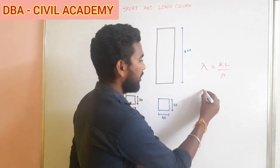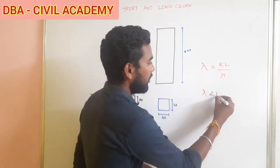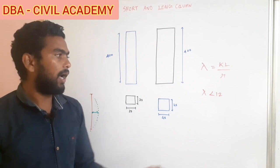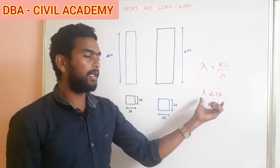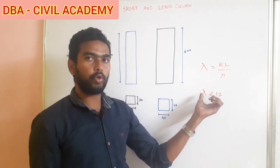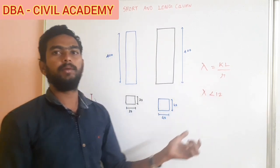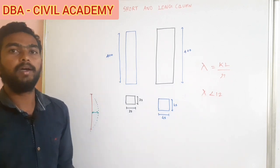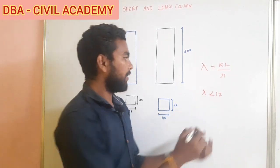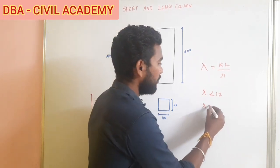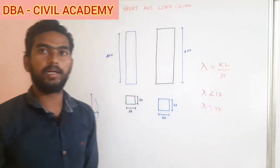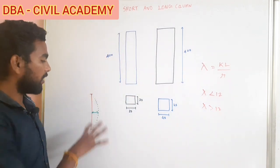If the lambda value is less than 12, it is a short column — the failure comes from crushing. If the lambda value is greater than 12, the failure comes from buckling, so it is a long column.